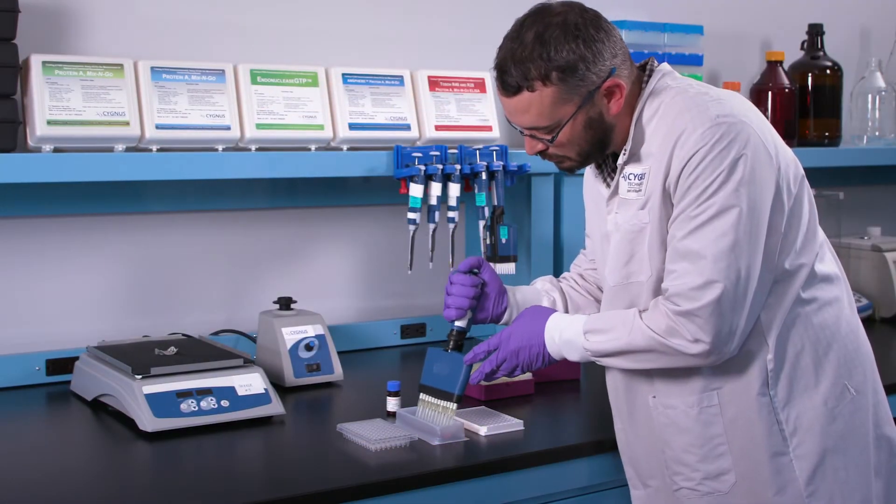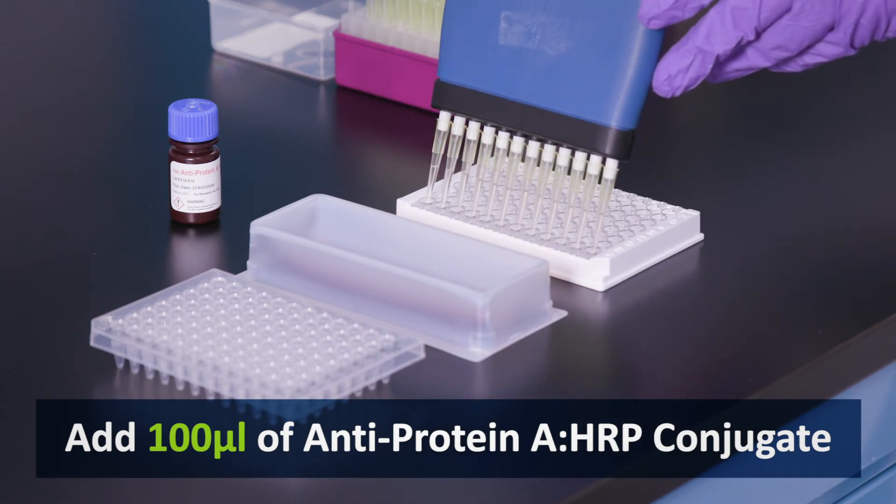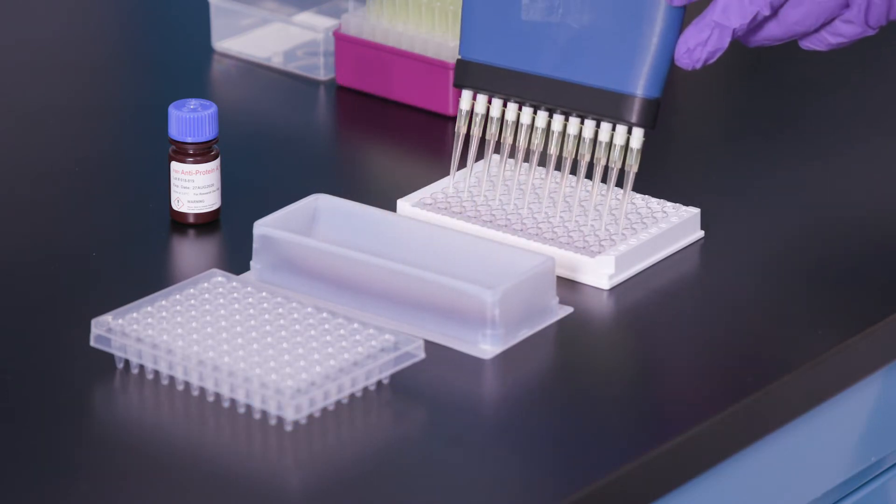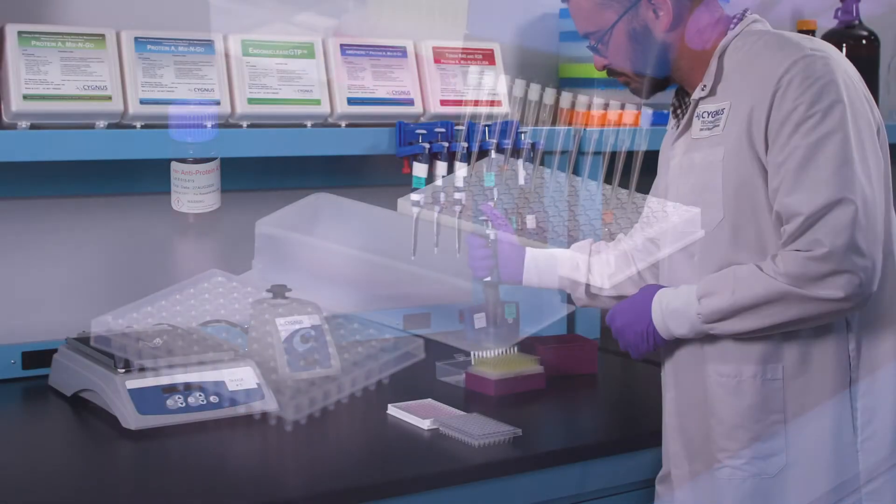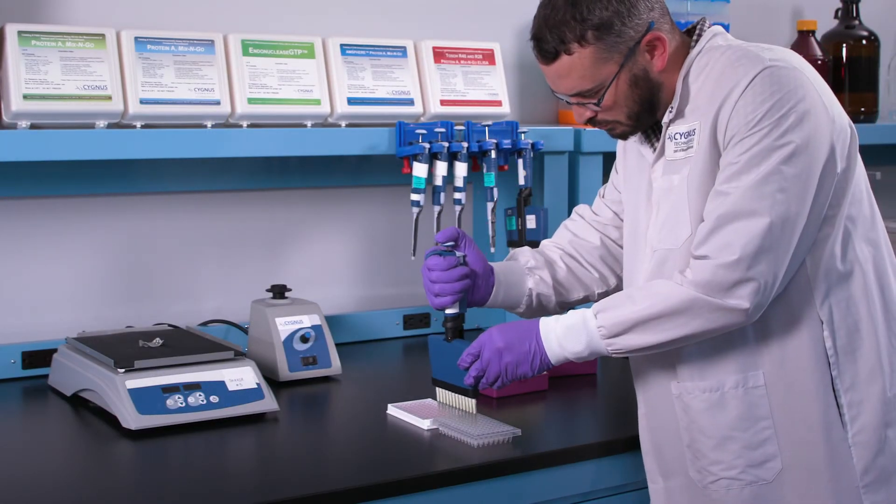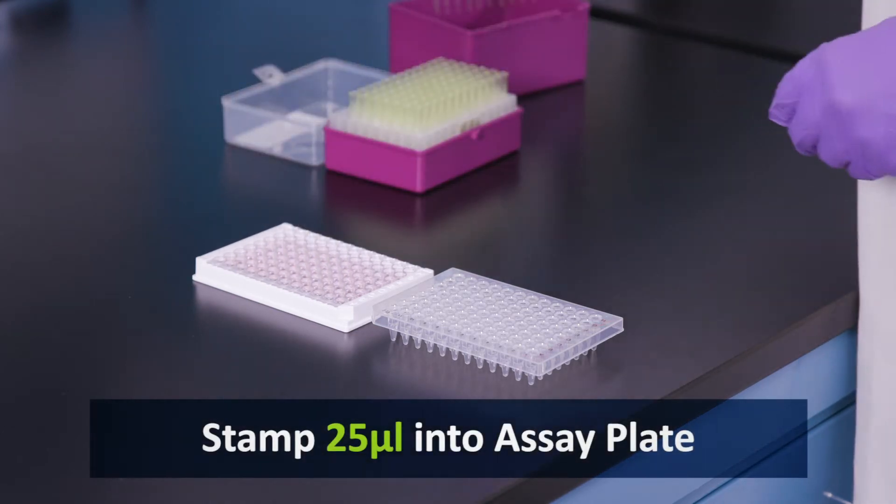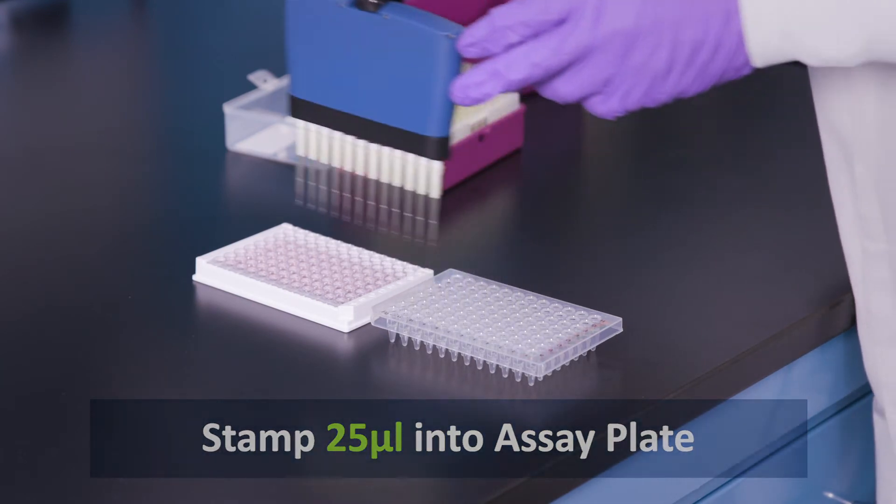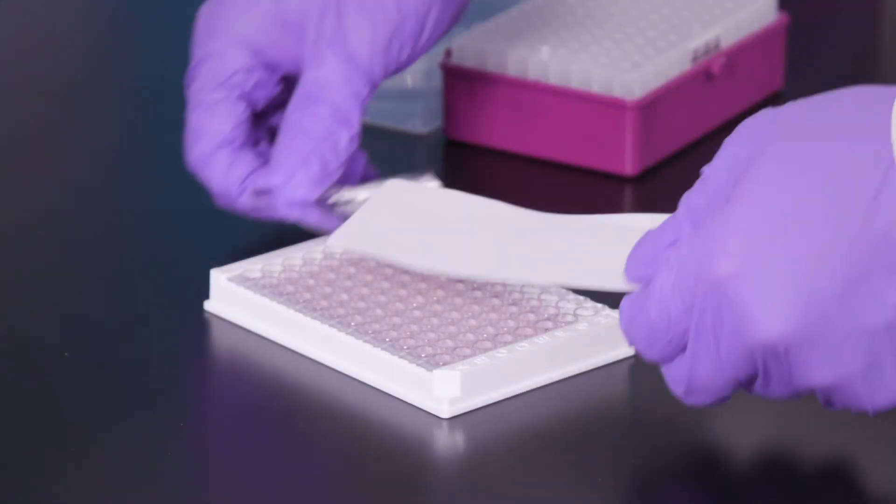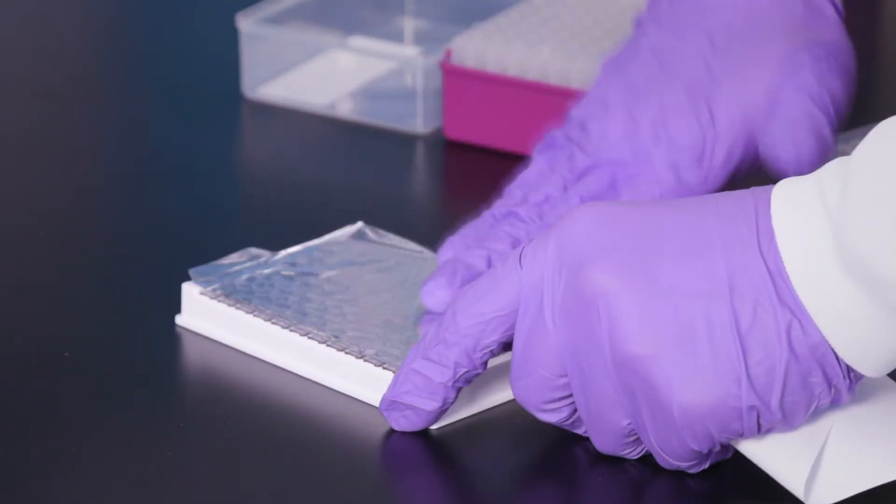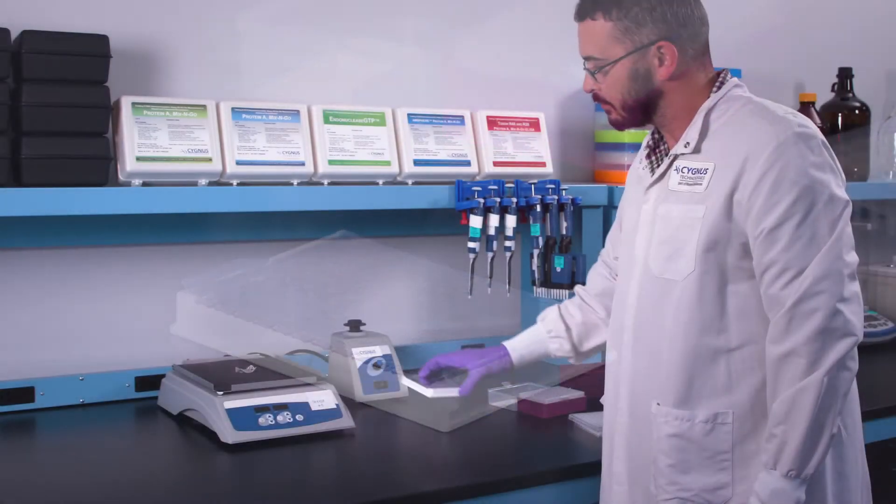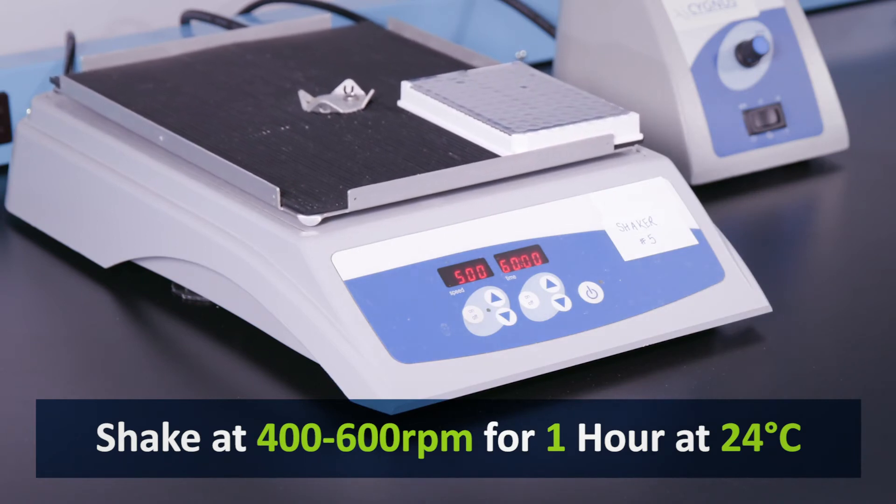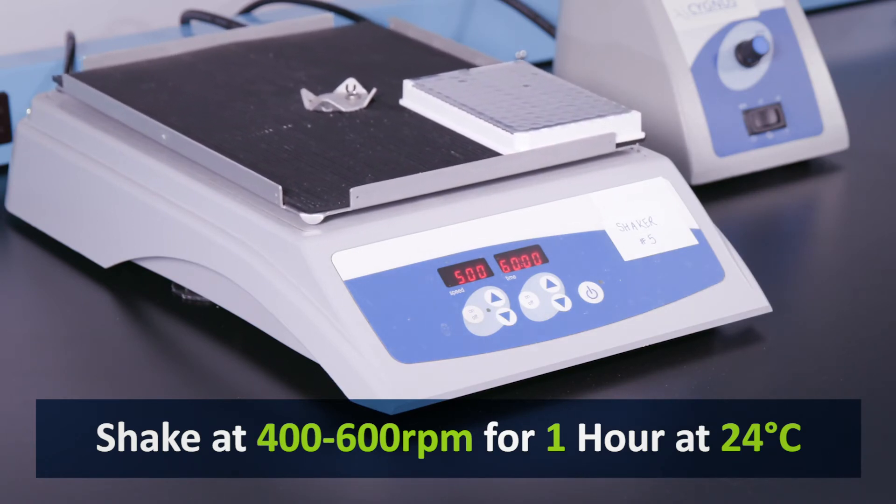Next, pipet 100 microliters of the antiprotein A HRP detection antibody into each well of the antibody-coated microtiter plate. Then, pipet 25 microliters of the denatured standards, controls, and samples into wells indicated on your work list. When finished, cover the plate and incubate on an orbital shaker at 400 to 600 RPM for 1 hour at a room temperature of 24 degrees Celsius plus or minus 4 degrees.